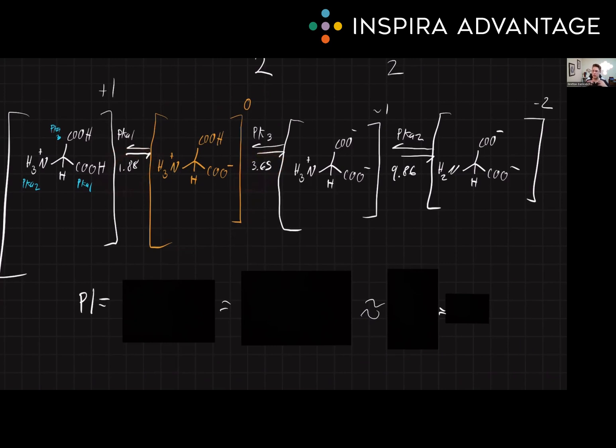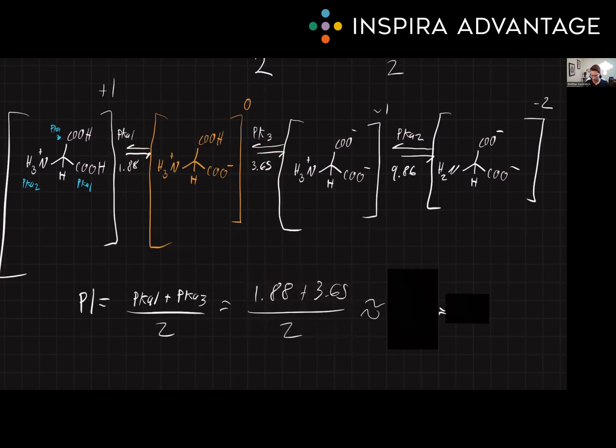Try this math on your own before I show you. Remember, you'll want to round. We're pretending like this is the MCAT, so no calculators. So we'll set up our equation where we say pKa1 plus pKa3 divided by 2. We plug in these numbers, it's 1.88 plus 3.865 divided by 2.